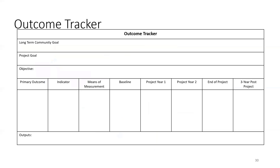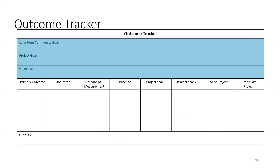This is an example of the Outcome Tracker. The Outcome Tracker is the form that ANA suggests to use as part of your evaluation plan. ANA requests an Outcome Tracker form for each objective in your project. When looking at the form, you should recognize many familiar fields, such as the long-term community goal, project goal, objectives, primary outcome, and indicator. These were all identified as part of your framework.